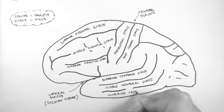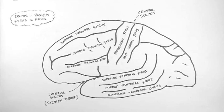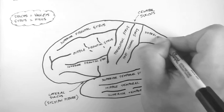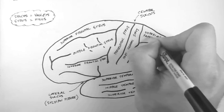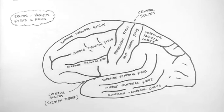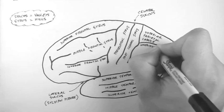So the frontal lobe and the temporal lobe are quite easy. Up here we have the superior parietal lobule, and below it we have the inferior parietal lobule.